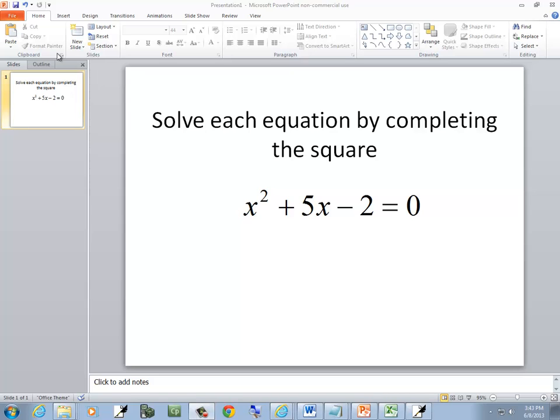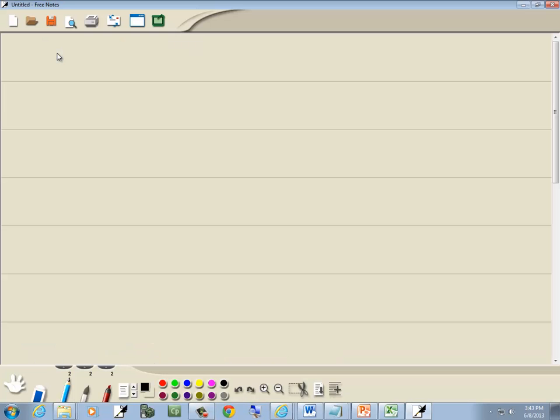We're going to solve this equation by completing the square. So we've got x squared plus 5x minus 2 equal to 0.